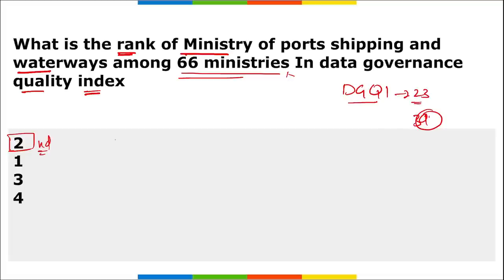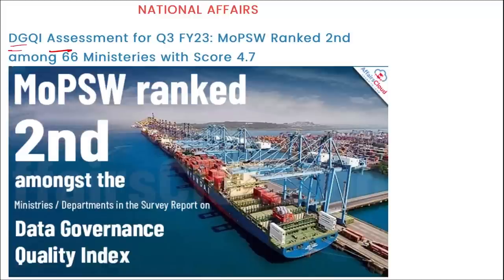This Data Governance Quality Index assessment for 2023 was conducted by the Development Monitoring and Evaluation Office, an attached office of NITI Aayog. The DGQI survey measures the maturity level of administrative data systems and their use in decision making. The Ministry of Port, Shipping and Waterways was ranked second among 66 ministries with a score of 4.7.